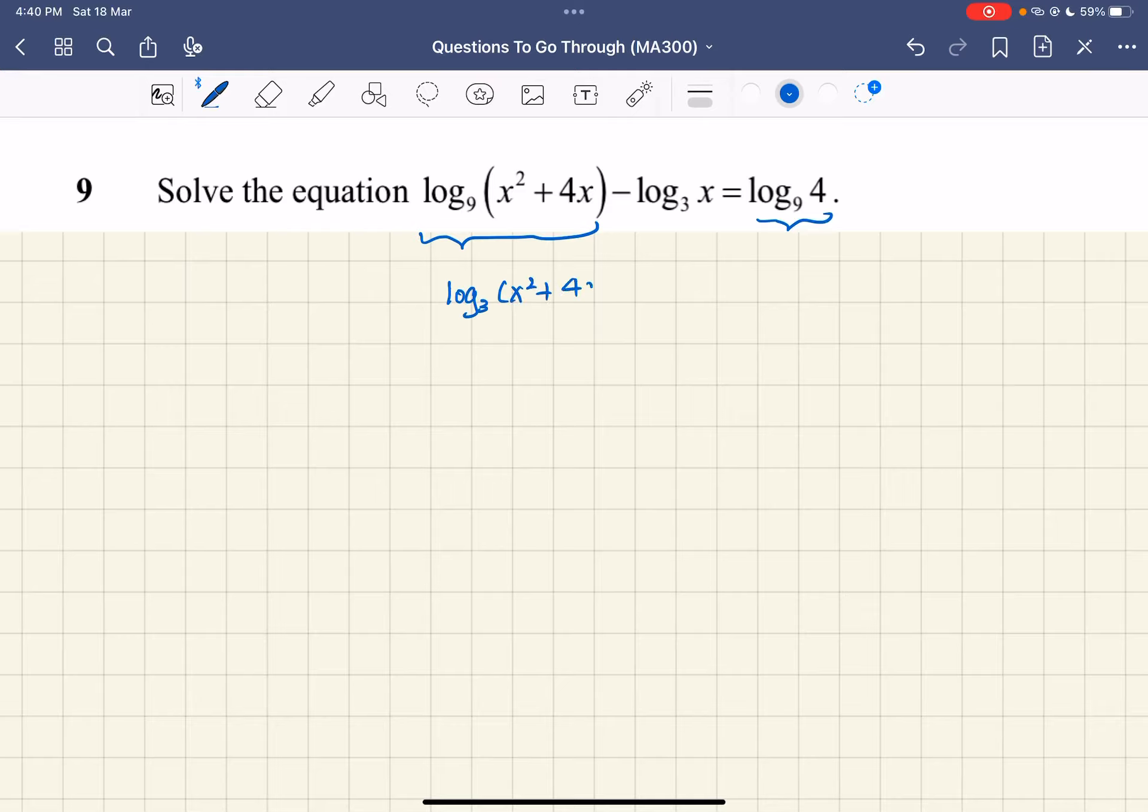x squared plus 4x over log base 3 of 9. This is the same as log base 3 of x equals log base 3 of 4 over log base 3 of 9. Personally, I like small numbers.